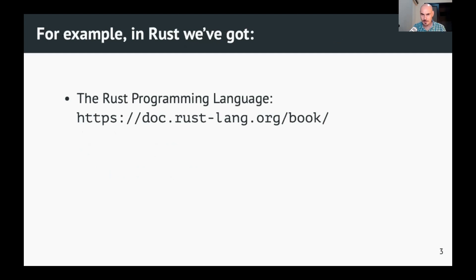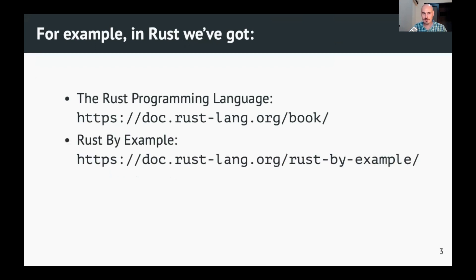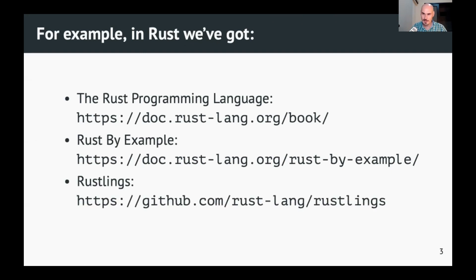In the Rust community we have several resources for doing exactly that. We have the Rust Programming Language book — we call it 'the book' — one of the most important books for first-time Rust learners. We also have a great resource called Rust by Example, covering areas like command line arguments, iterators, ownership, and examples for all those topics. And we have Rustlings — a collection of small exercises to get your hands wet with Rust features.